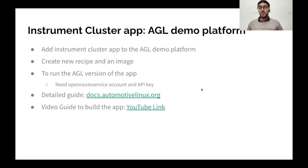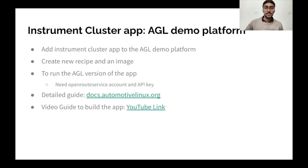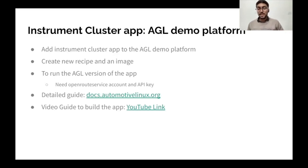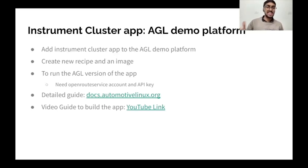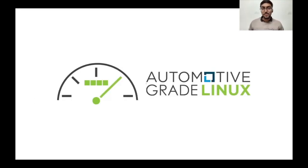To run the AGL version of the app, you first need an Open Route Service account and an API key to get the path between source and destination. If you do not provide that key, you will only get the tile map view. If you want to try out this app, you can check out my GitHub, or follow the detailed guide on docs.automotivelinux.org, or watch the video guide on YouTube to build the AGL version — or the non-AGL version as well.